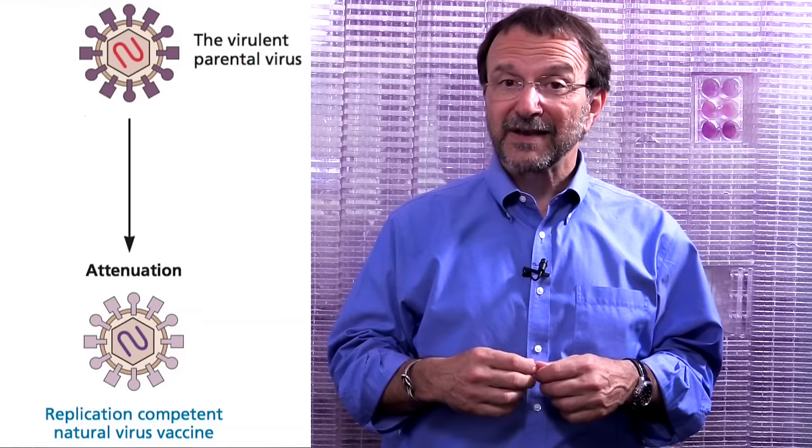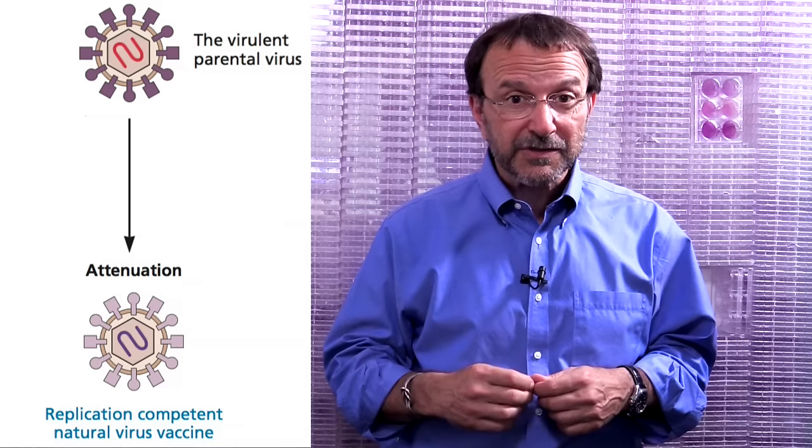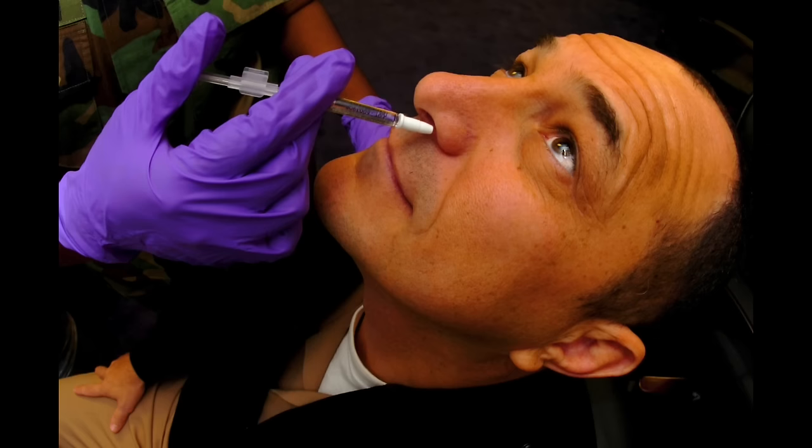Attenuated vaccines can infect the host, but they don't cause disease. Examples include the well-known oral polio virus vaccine, the Sabin vaccine, measles virus vaccine, and the influenza virus vaccine that's given as a nasal spray.